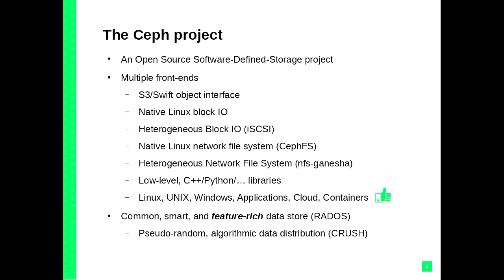Crucially it has multiple front-ends, so it's a multi-protocol solution. It gives you S3, Swift, native Linux block I/O called RADOS block devices. Heterogeneous block I/O access via iSCSI gateways. There's a native Linux network file system called CephFS. Heterogeneous network file system access with NFS Ganesha — I wouldn't recommend using that for production. Low-level interfaces to the block storage algorithm and it does everything: Linux, Unix, Windows, applications, cloud, and Docker.